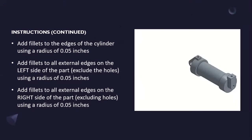Add fillets to the edges of the cylinder using a radius of 0.05 inches. Add fillets to all external edges on the left side of the part, excluding the holes, using a radius of 0.05 inches.